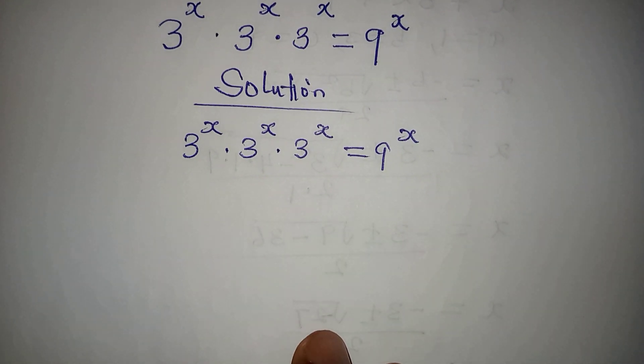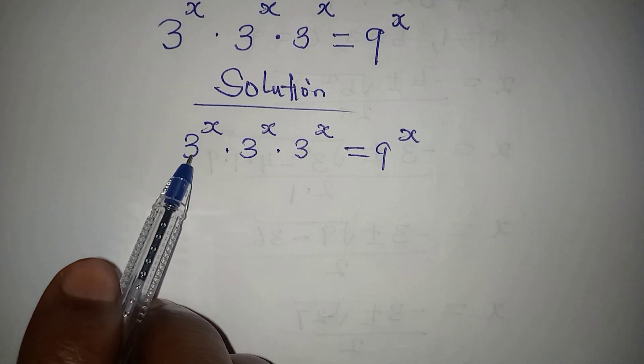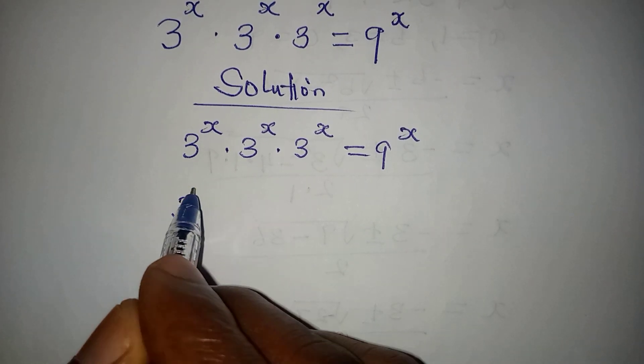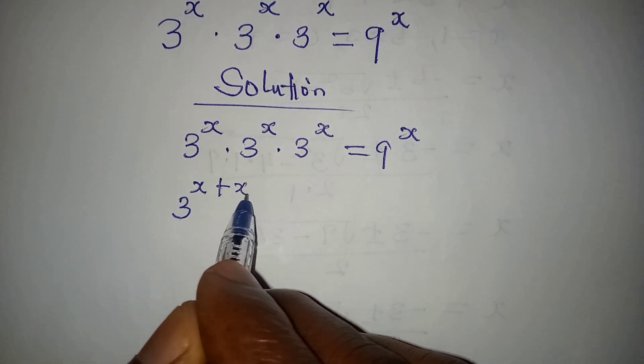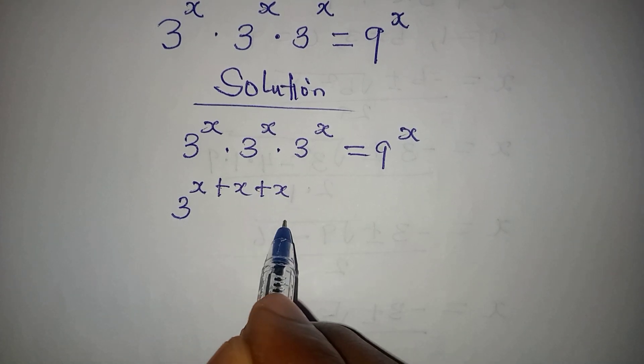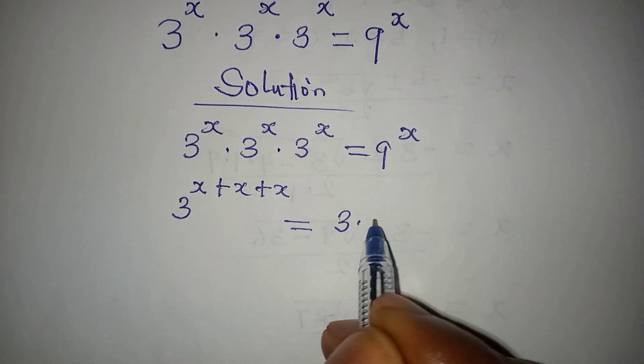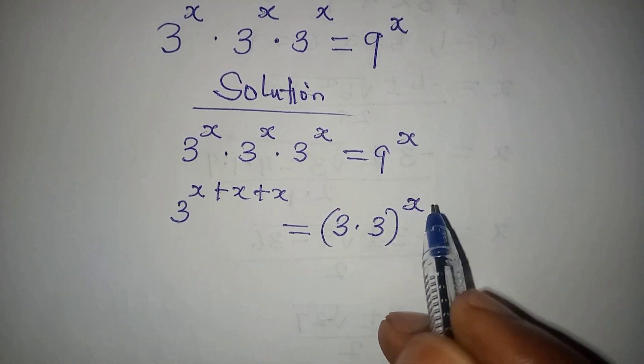According to one of the laws of indices, if we have the same base, you pick one of them and add the powers. So we have x plus x plus x, and this will be equal to 9, which is 3 multiplied by 3, to the power of x.